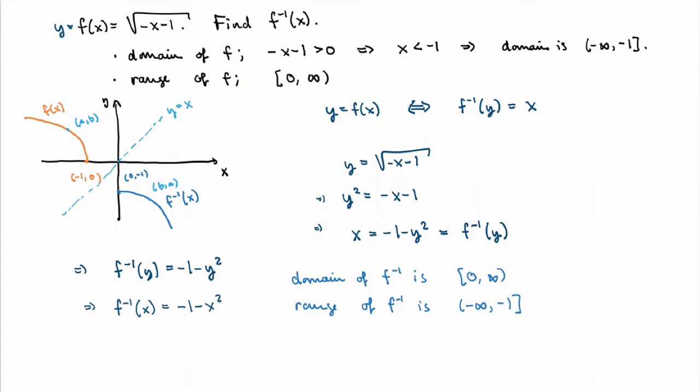Before summarizing, one important note: I mentioned you need to check that the function is one-to-one. Sometimes functions are not one-to-one, but instead of giving up, you can restrict the domain so that the function is one-to-one on that restricted domain, and then define the inverse function for this restricted version. This is something we'll have to do when we define inverse trig functions.